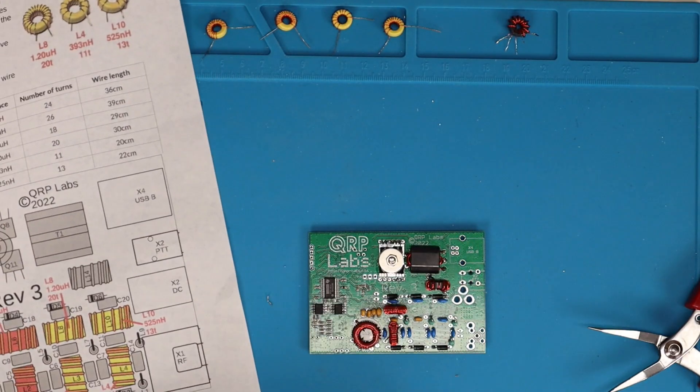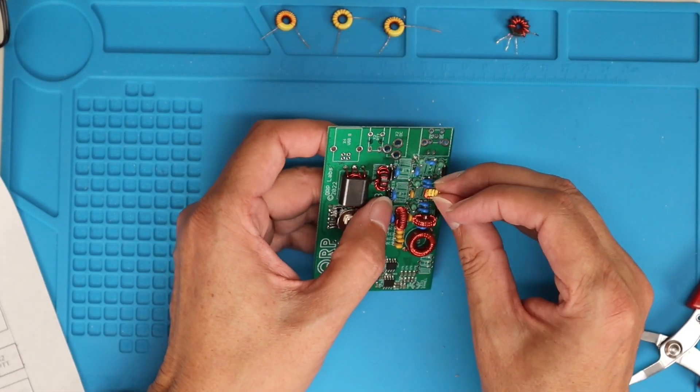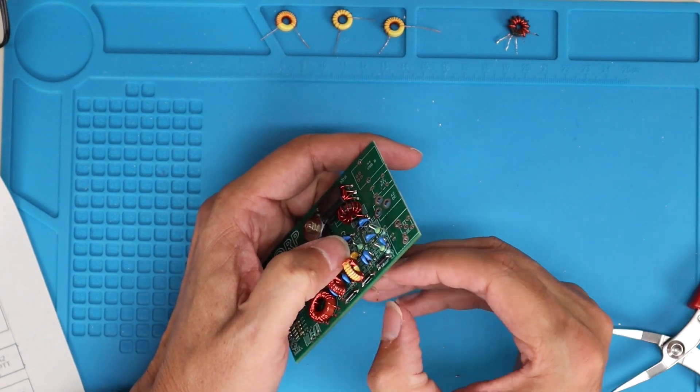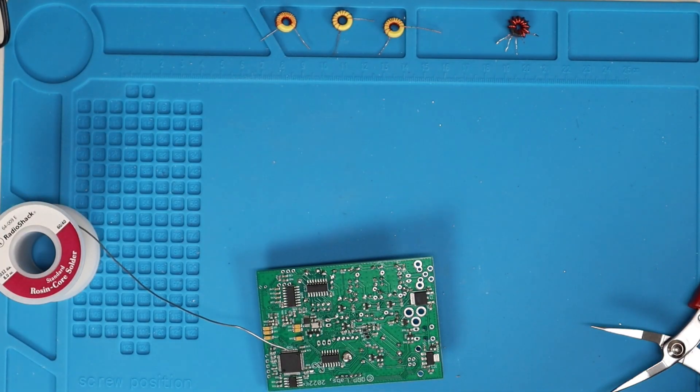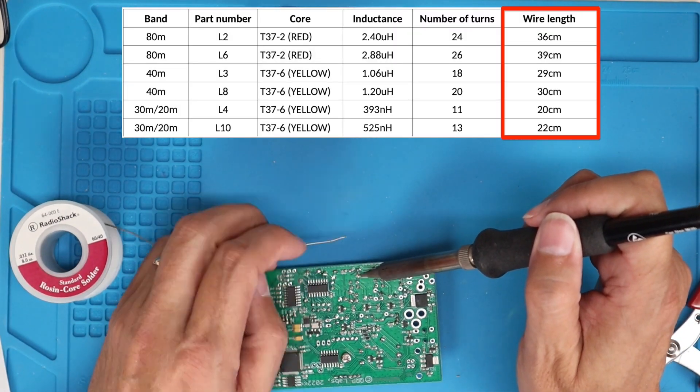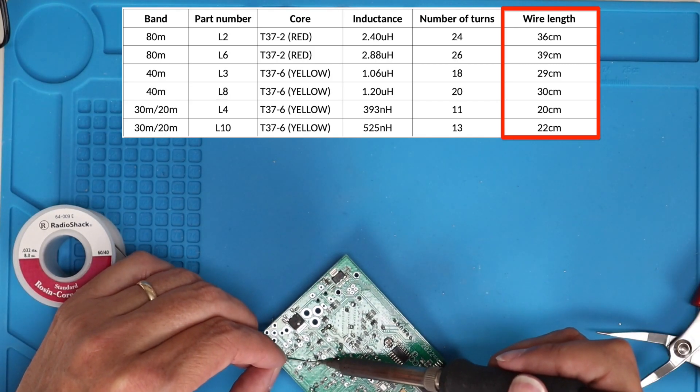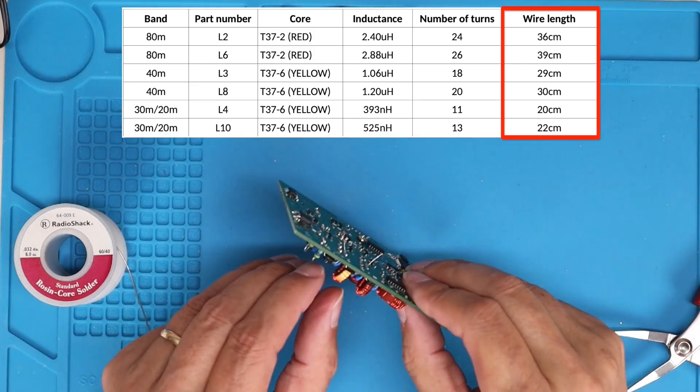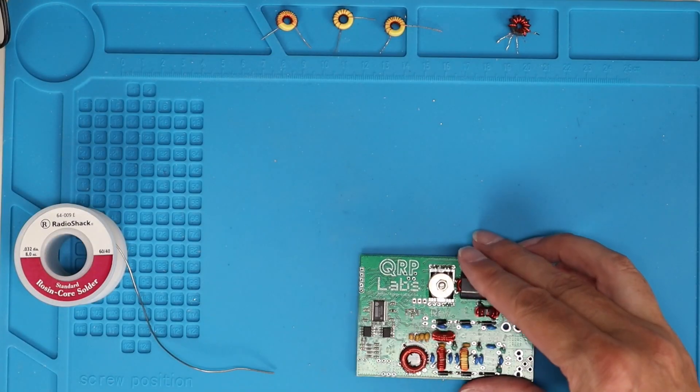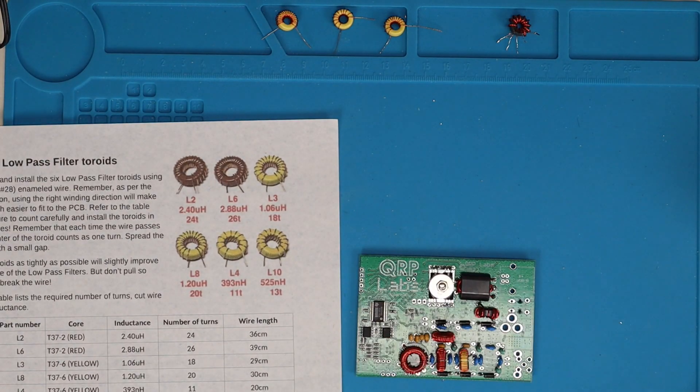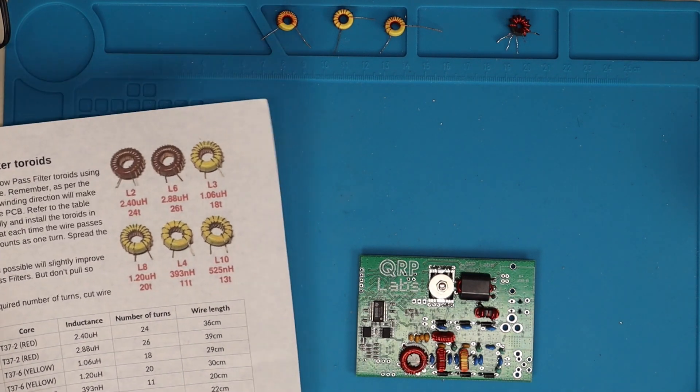Next we're going to go ahead and we're going to do L3, which is the 1.06 microhenry inductor for 40 meters. The wire length measurements in the manual give you more than enough, so do not cut them a little long. I tended to cut them longer than what they gave, and I ended up a little shorter than I would have liked on the final T2 that we're going to get to in a minute. It worked out fine, but it would have been better to not have cut them so short.